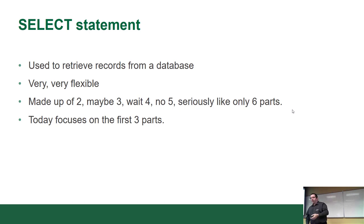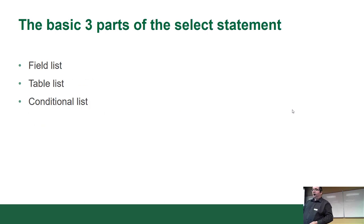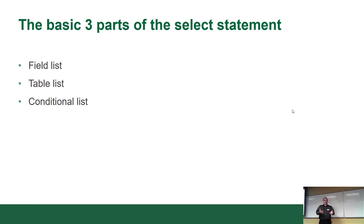Today we'll focus on the first three parts for sure, and then time permitting we'll do some of the others. The basic three pieces of the SELECT statement are the field list, the list of tables, and the conditionals — also known as predicates.